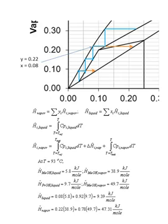For the vapor phase, we integrate the liquid heat capacity from the reference temperature to the boiling point, add the heat of vaporization, then integrate the vapor heat capacity from the boiling point to system temperature T. At 93 degrees Celsius, the specific enthalpy of methanol in the liquid phase is 5.8 kJ/mol, methanol vapor is 38.9 kJ/mol, propanol liquid is 9.7 kJ/mol, and propanol vapor is 49.7 kJ/mol. The liquid and vapor mole fraction enthalpies are calculated from these values.